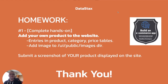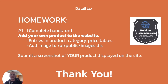Now we come to the homework. For those who'd like to earn a badge for this exercise, the homework is to add your own product to the website. You can find details in step four of the README. Make entries for your own product in the product, category, and price tables, then add an image into the /ui/public/images directory — the naming convention there must match up with the product ID. Submit a screenshot of your product displayed on the site and you'll earn a badge. Thank you to those who stayed with us, and we'll see you next time.